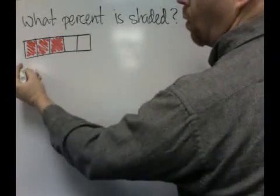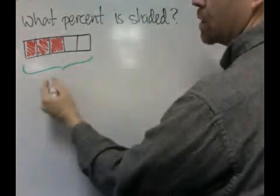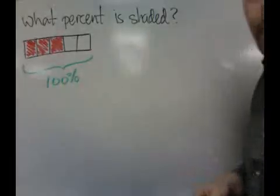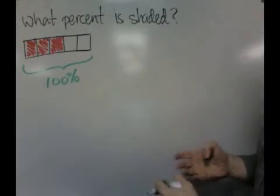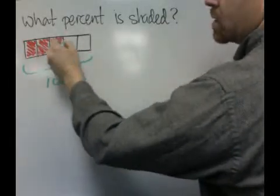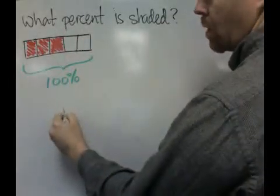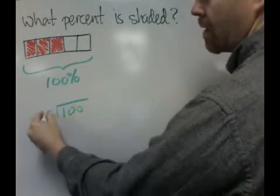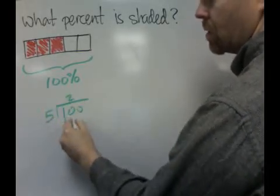So if the whole thing was shaded, that would be 100%. But the whole thing isn't shaded, only a piece of it is shaded. So there's five pieces total, so 100 divided by 5 equals 20.